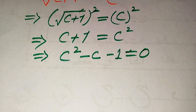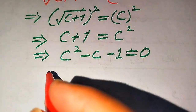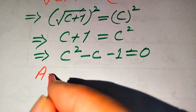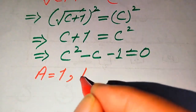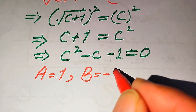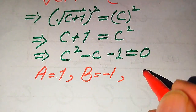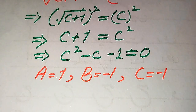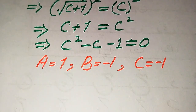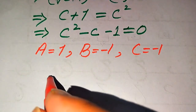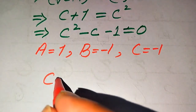To apply the quadratic formula, first we write the coefficients of this equation. The coefficients are: a equals 1, b equals minus 1, and c equals minus 1.